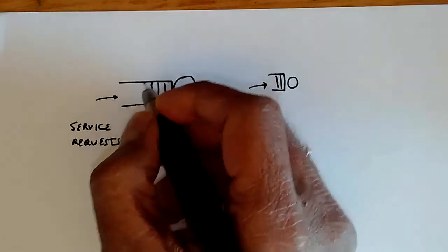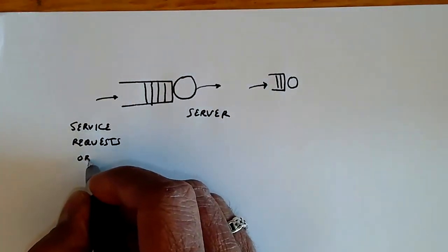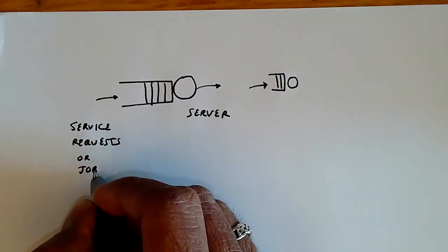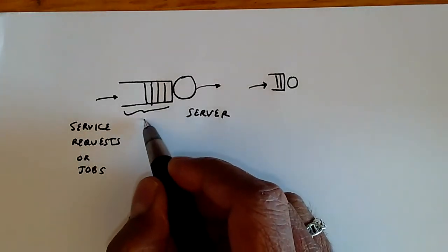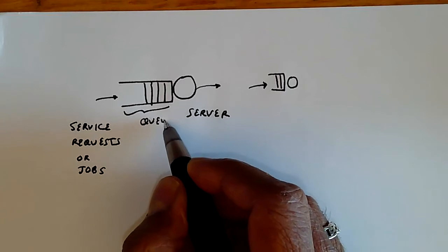The service requests are also called jobs. And these are waiting in the queue over here, which is the queue or buffer.